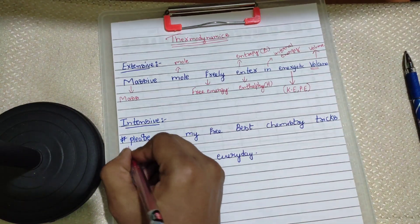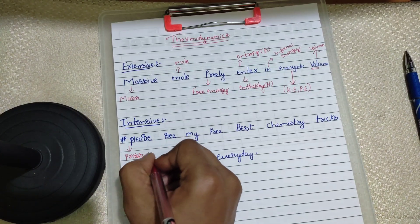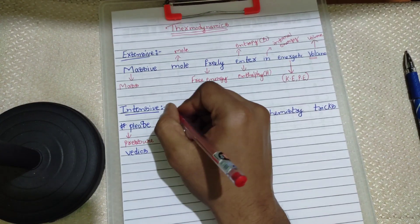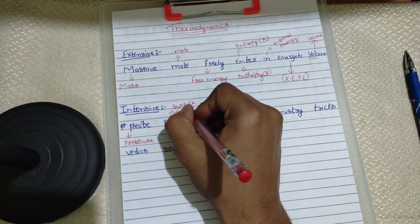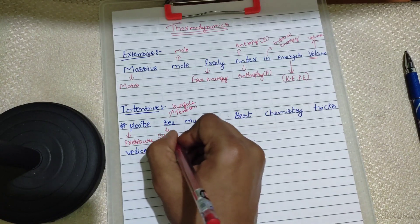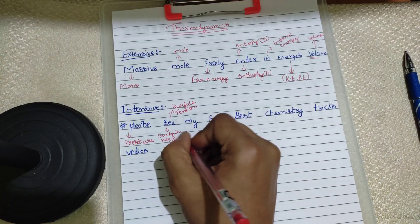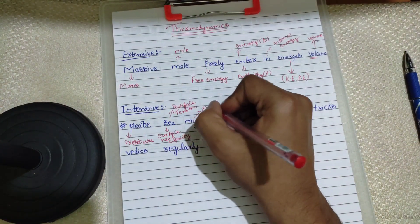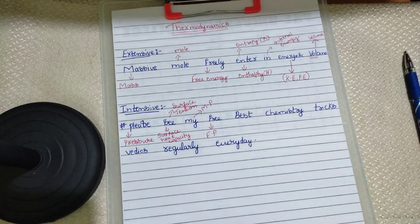From P we have pressure; from S we have surface tension and specific heat capacity; from M we have melting point; from F we have freezing point.